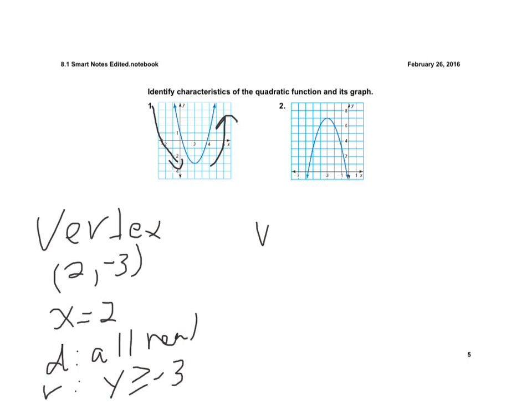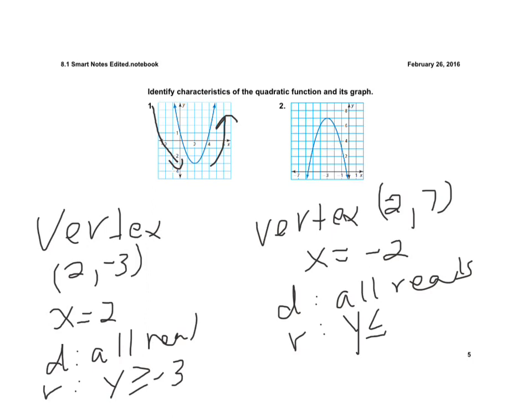Number 2, my vertex appears is at 2 comma 7. That means my line of symmetry would be at, oh excuse me, that's negative 2 comma 7. My line of symmetry would be at x equals negative 2. And here my domain is all reals. And then my range would be the values of y is less than or equal to that y coordinate of my vertex. And then it opens down, which means it's actually an increasing function up until that value of x equals negative 2 and then it's a decreasing function after that.